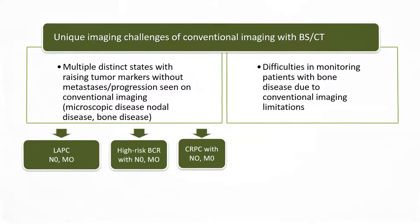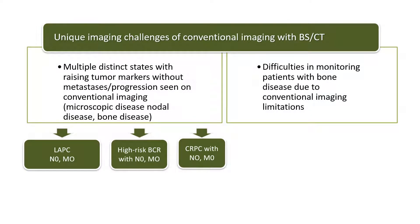Many of you will be aware that there are multiple clinical states where tumor markers are increasing, but you don't see metastatic disease or tumor progression on conventional imaging. This is usually due to microscopic disease, usually in nodes or bones, but often at other sites. And so all of us have seen patients with high-risk biochemical recurrence, non-metastatic castration-resistant prostate cancer, where a substantial number of these patients will in fact have metastatic disease or disease visible on a next-generation imaging technology.